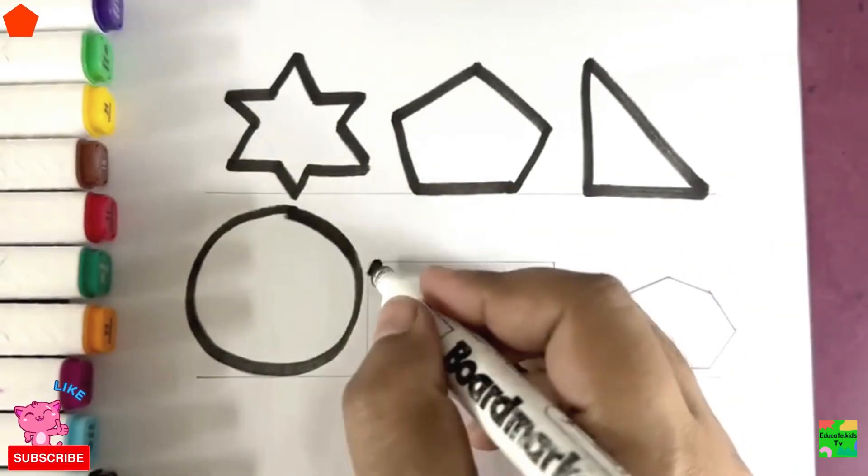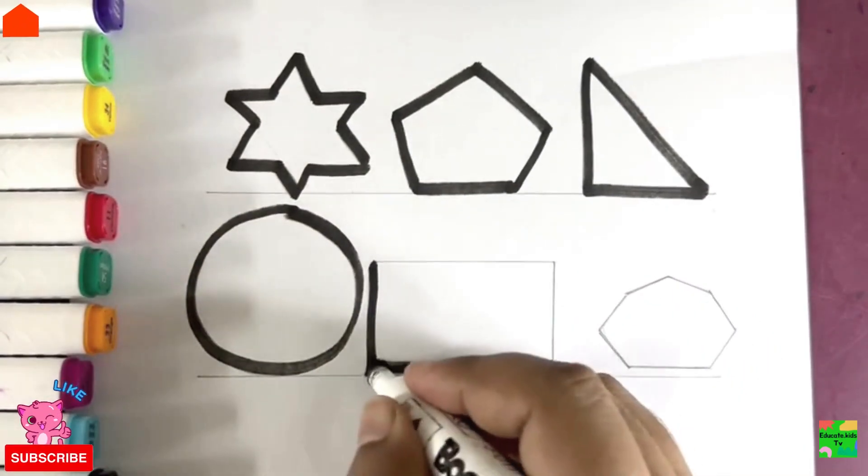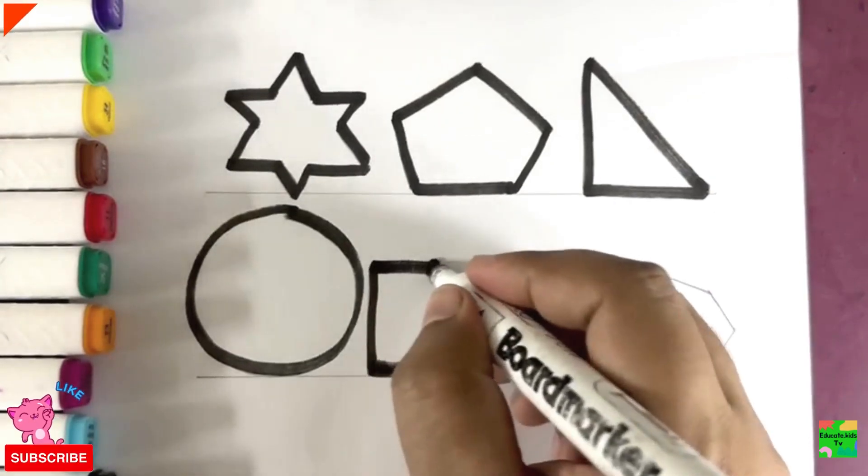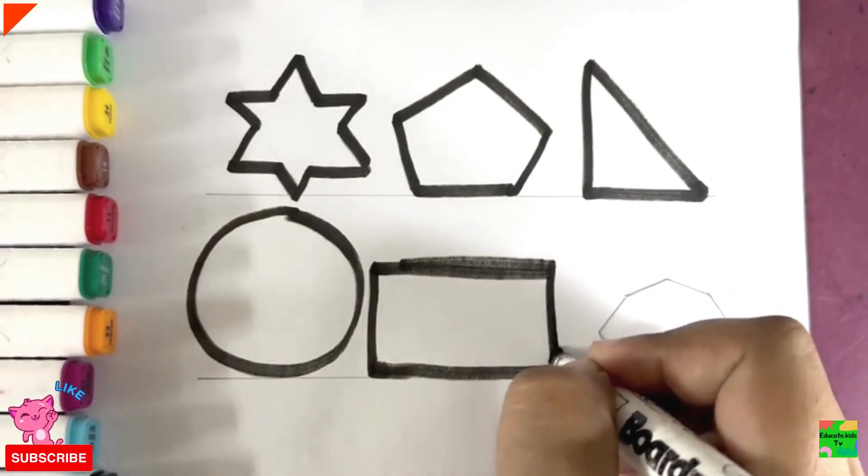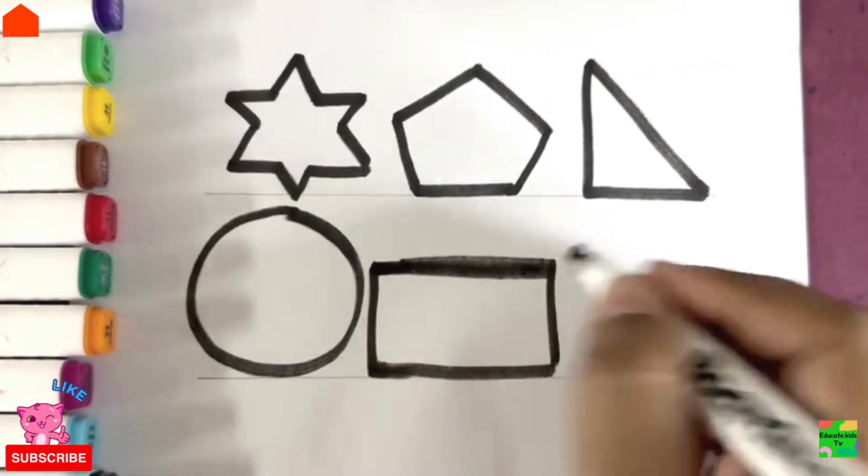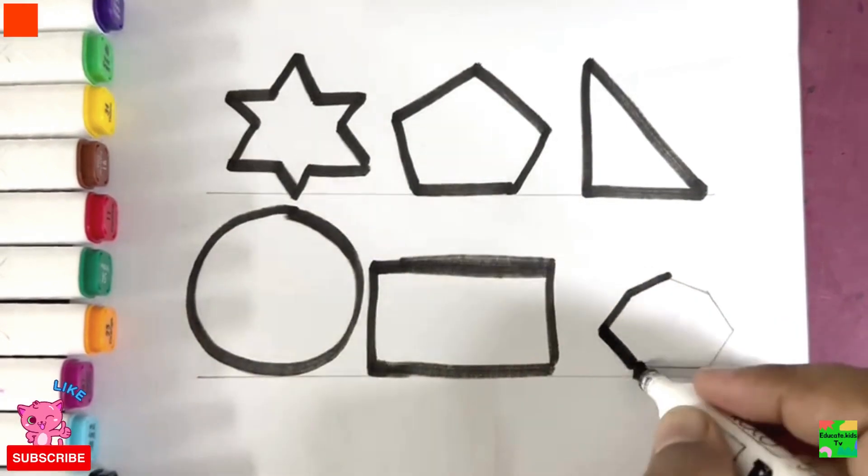Next shape is rectangle. Hooray! Next is heptagon.